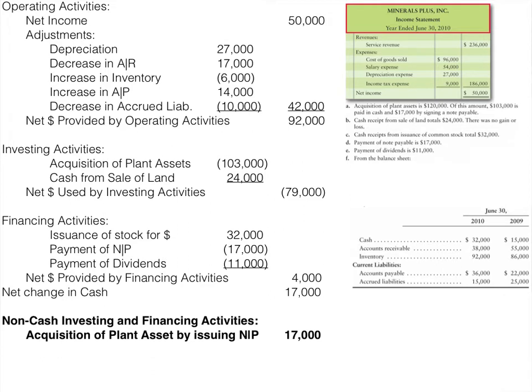There was an increase in accounts payable, meaning we didn't pay toward them — possibly part of that inventory purchased on account — so cash is going up by $14,000. There was also a decrease in accrued liabilities, which means we paid toward them, so cash is going down. Total adjustments result in an increase to cash of $42,000, giving us net cash provided by operating activities of $92,000.